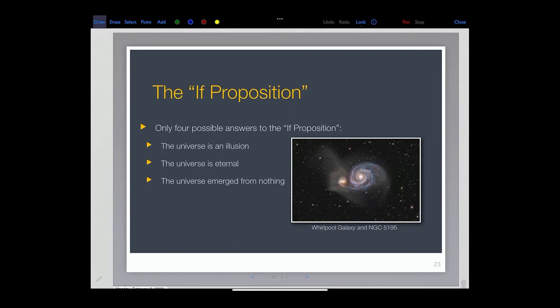It has to be something more than that. It doesn't have logical coherence. So the universe is eternal is one claim that's made, or the universe emerged from nothing. So that's really the options that we have in front of us. If it didn't emerge from nothing, if the universe isn't eternal, if it's not an illusion.